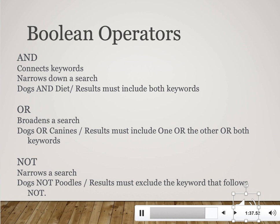Finally there's NOT, which is probably the easiest to get a hang of. It excludes a topic and thereby narrows down a search. For example, you might search for 'dogs NOT poodles,' and all your results would be about all different types of dogs, but nothing about poodles would be included.